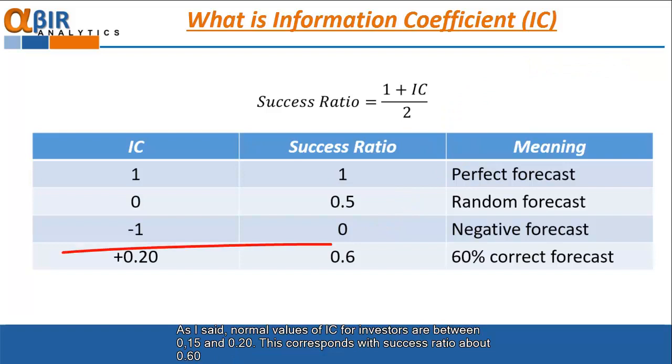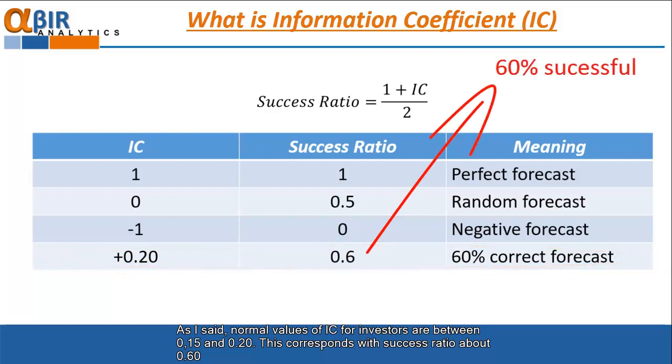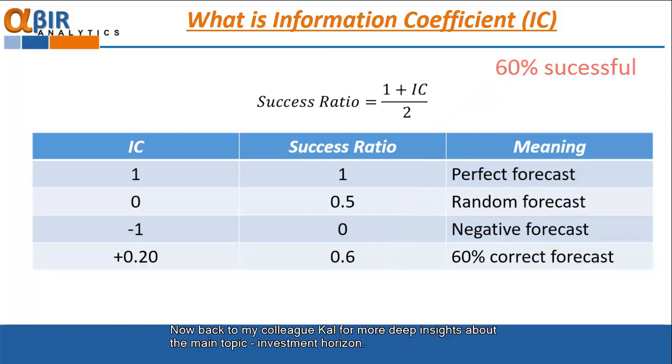As I said, normal values of IC for investors are between 0.15 and 0.20. This corresponds with success ratio about 0.60. Now back to my colleague Kaio for more deep insights about the main topic, investment horizon.